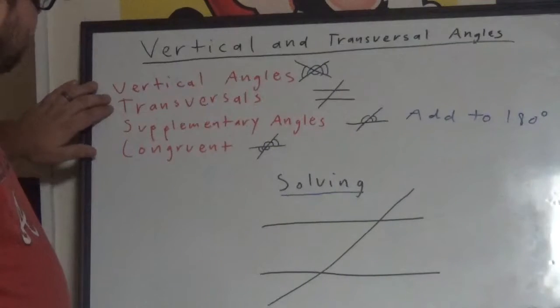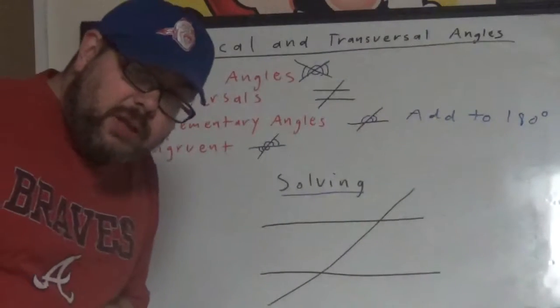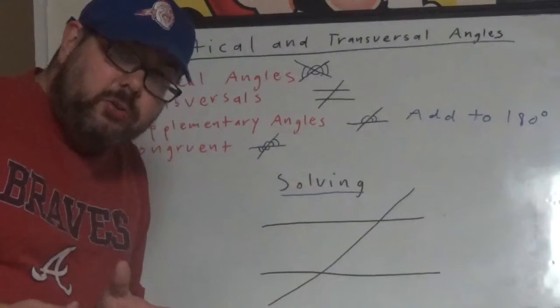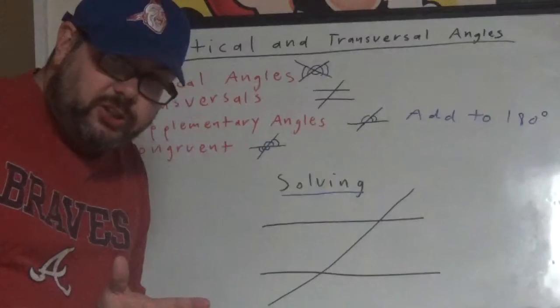A transversal means that we have two parallel lines. Parallel lines mean two lines that could go on forever in either direction and never cross, never touch each other.